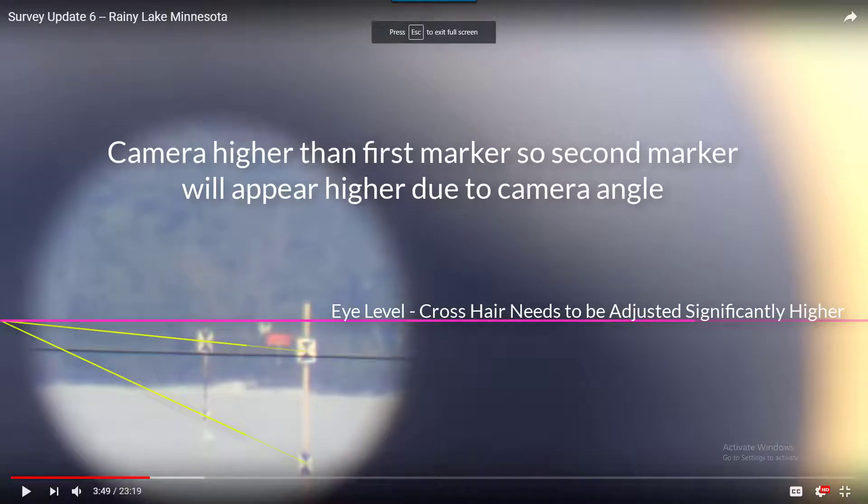In the second footage, we see the opposite. The auto level is above the first marker so the second marker will always appear higher because George Lucas has a high camera angle. He's a movie genius.